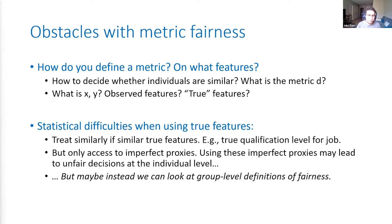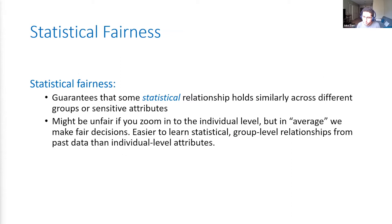What may be a bit easier is to look instead at group-level definitions of fairness. Maybe it's hard to learn exactly the qualification level of each individual, but it's a bit easier to learn statistical properties of a population at the level of a much larger group. This motivates the study of notions of statistical fairness, in which you want to guarantee that some statistical relationship holds similarly across different groups or different sensitive attributes. It will require fewer assumptions and is just easier to learn from past data than individual-level attributes.